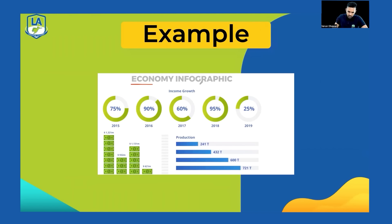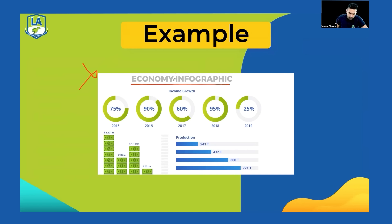Here's an example using an economy infographic: 'The given image gives information about economy infographic. It is a very beautiful image and I have to speak for 40 seconds about this image. There are a lot of different elements in the image which are income, growth, and 90. I can see production, 241, and 432. I can also see 2015, 2016, and 2017. One of the elements is maximum, the other one is minimum. To conclude, the image is informative.' Don't worry about explaining everything — only speak words you know how to pronounce.